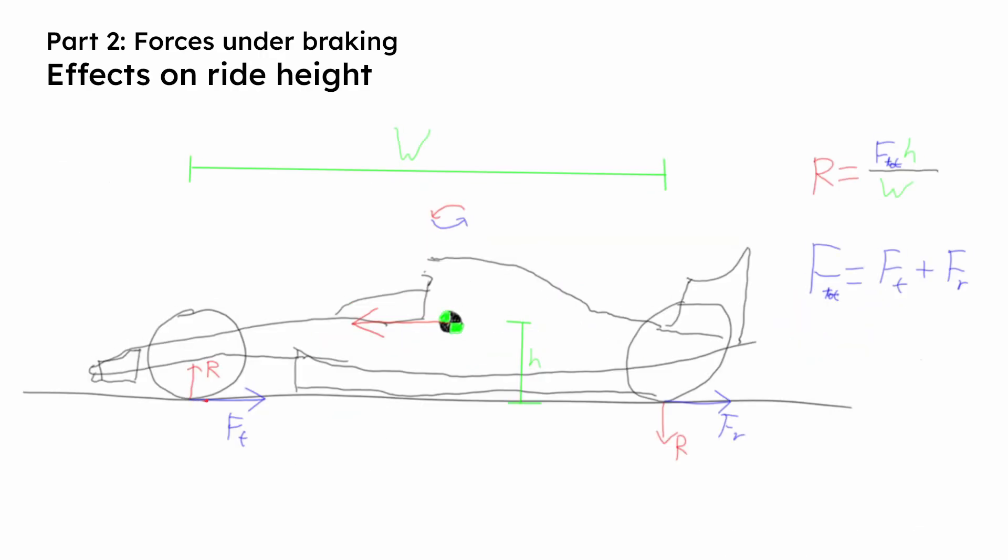Under braking, the frictional force decelerating the car acts at the contact patch of the wheels. However, the inertia of the car acts from the center of mass, which is offset from the track surface, resulting in a moment. This causes the nose of the car to dive downwards. To counter this, there is an additional load, which we will call R, which is added to the front wheels and is also removed from the rear wheels. The magnitude of this force is equal to the total braking force times the height of the center of mass from the track divided by the wheelbase.